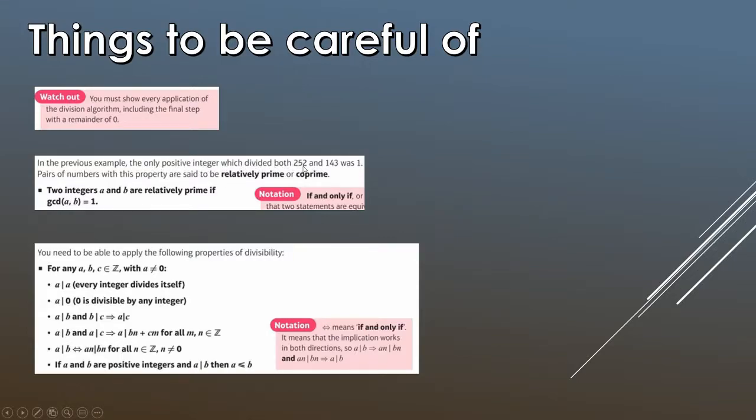What they said here is for example, the only positive integer which divided both 252 and 243 was 1. So if you get two numbers that have a GCD or HCF of 1, these are what we call co-prime numbers or relatively prime. I'm more used to seeing co-prime but both definitions are absolutely fine. So we say two integers A and B are relatively prime if the GCD of A, B is 1.